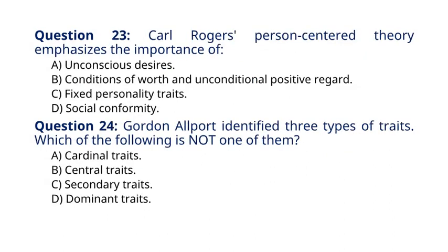Question 23. Carl Rogers' person-centered theory emphasizes the importance of: A. Unconscious desires. B. Conditions of worth and unconditional positive regard. C. Fixed personality traits. D. Social conformity.